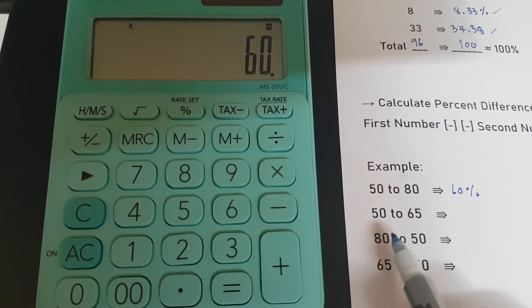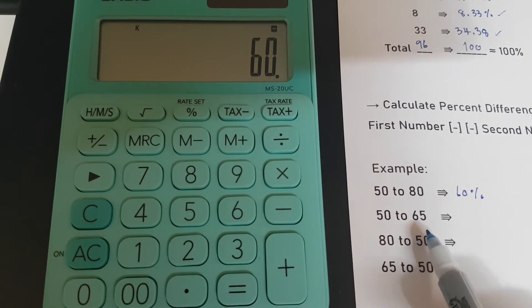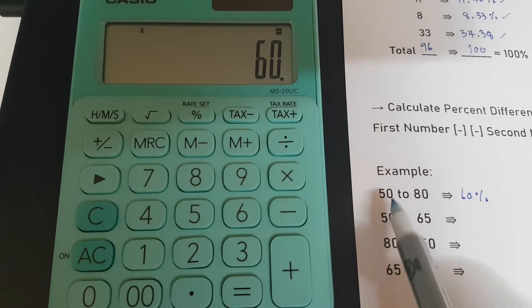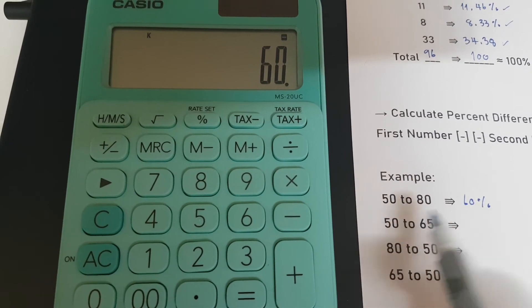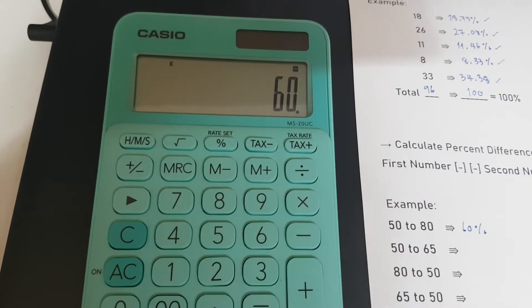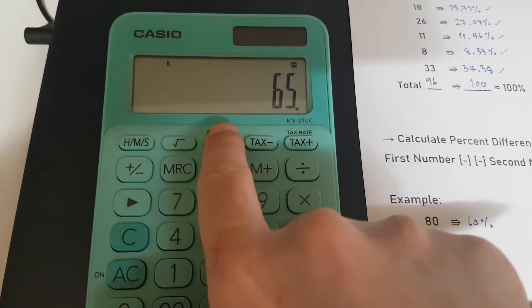And what percentage from 50 to 65? If you still have the same 50 from the beginning, you don't have to retype, so just press 65 and percent.